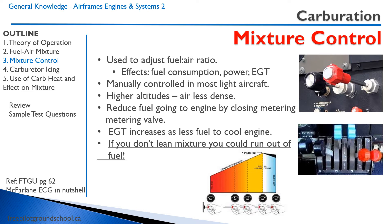Looking at the graph here — as we lean the mixture, the EGT rises because we have less fuel available for cooling. At the peak EGT, after that point the EGT will start dropping again. This is called operating the engine lean of peak. It's typically only done on engines with proper engine monitoring equipment, and at that point you have excess air that will cool the engine.